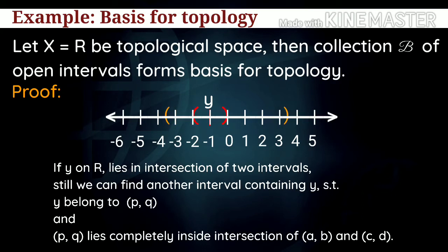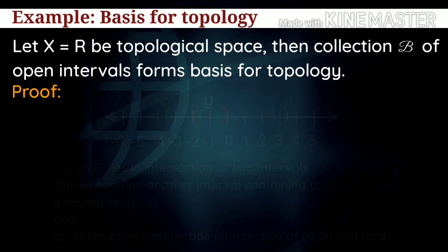Say y is lying in intersection of two intervals (a,b) and (c,d). Still we are able to find an interval (p,q) such that y belongs to interval (p,q) and interval (p,q) itself lies in the intersection of the two open intervals. Interval (p,q) completely lies inside the intersection.